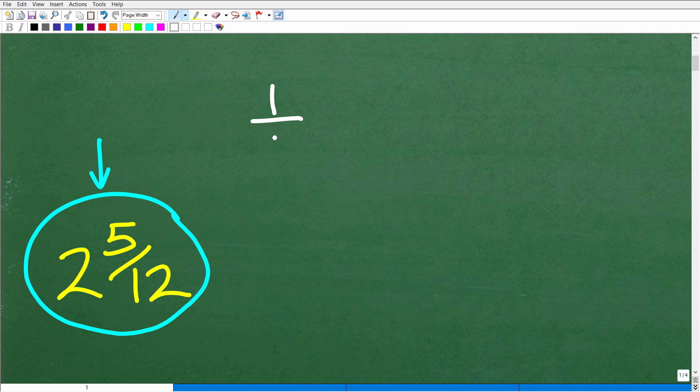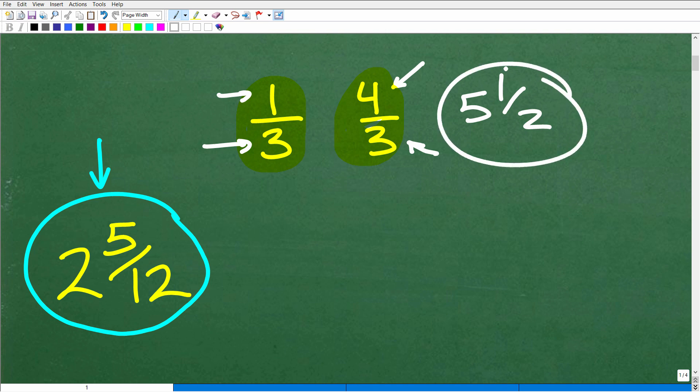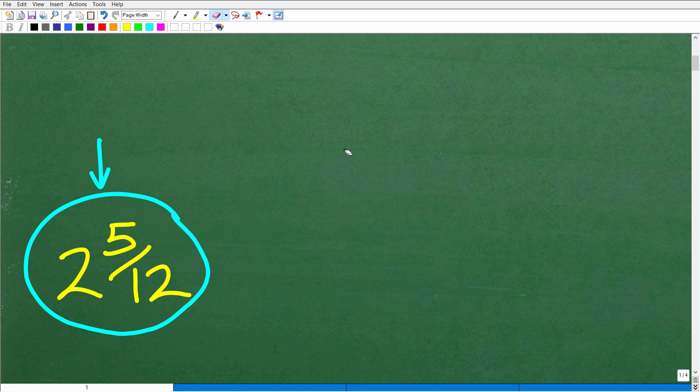Of course, you could write this as an improper fraction. Just a quick review: if you have a fraction like one third or four thirds, and something like 5 and one half. In mathematics, a fraction where the denominator is larger than the numerator is called a proper fraction. Here, where the numerator is larger than the denominator, we would call this an improper fraction. And this type of fraction is called a mixed number fraction. You could convert improper fractions into mixed numbers and mixed numbers into improper fractions. That is a separate discussion. But we want to make sure we understand these proper terms in mathematics.